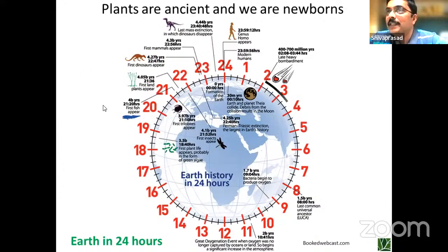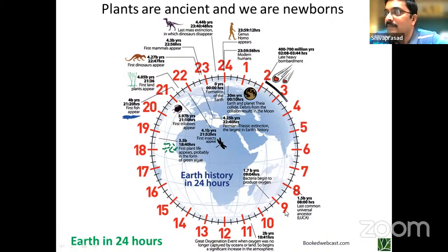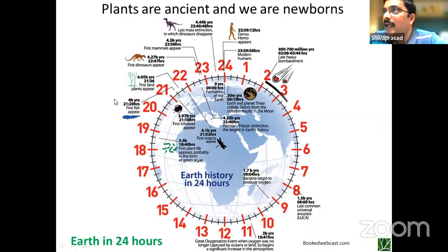Before we go, this is just to remind all of us where we stand. If we count Earth's life divided into 24 hours, we have come just in the last four seconds — just time to say 4, 3, 2, 1. Whereas life forms started very early, something like almost 16 hours. The plants came something like 5 hours in that time. They are ancient. Compared to them, we are just new bugs.